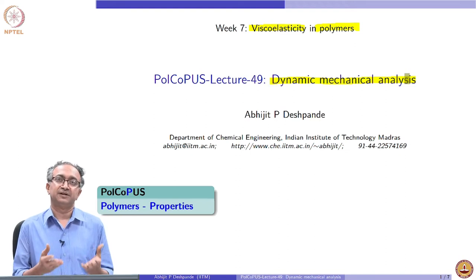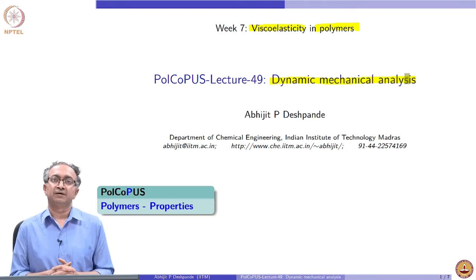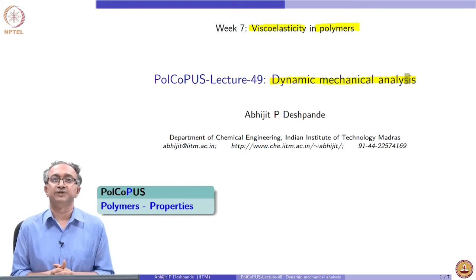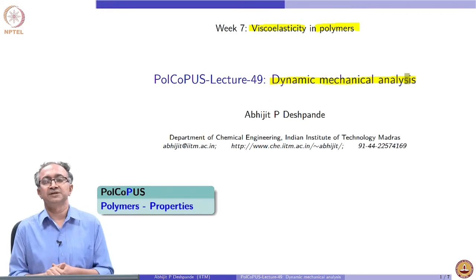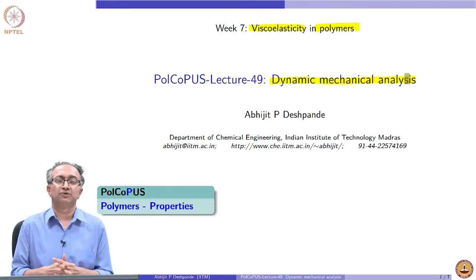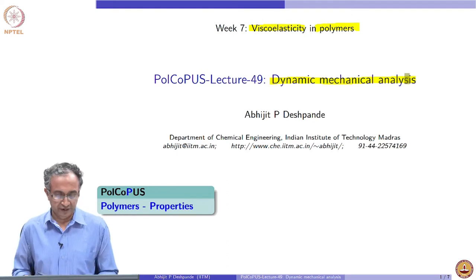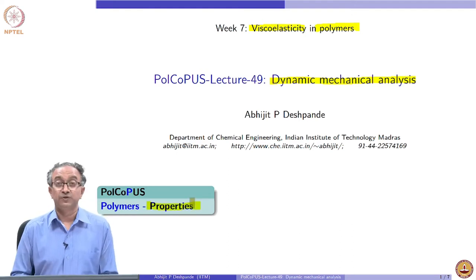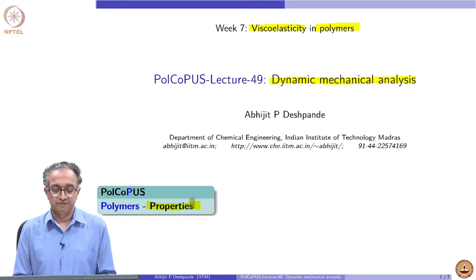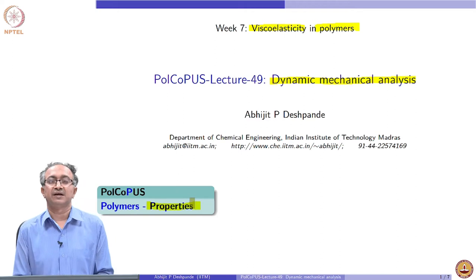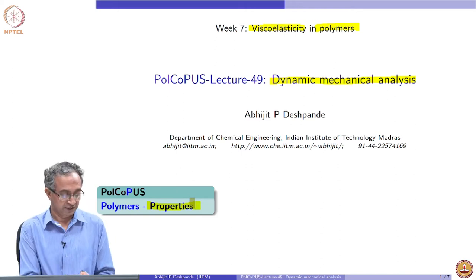For more solid-like materials, we generally tend to use the term DMA, which we use for analyzing the dynamic response of these viscoelastic polymeric systems. For fluid-like systems, we tend to use the dynamic shear rheometer, or just a rheometer. Our focus is to look at properties of these viscoelastic materials, and dynamic mechanical analysis is a powerful tool to characterize them.